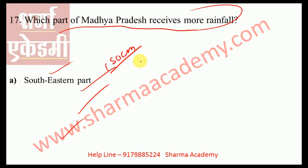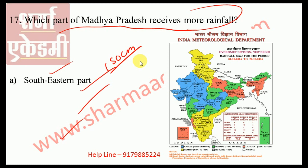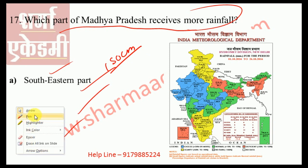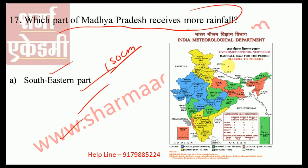The southeastern part of Madhya Pradesh receives the highest rainfall due to its proximity to the sea and the Arabian Sea branch — specifically the Mumbai branch and the Bay of Bengal branch hitting the Satpura-Maikala range. Looking at the map, the east part receives 35.9 and the west part 32.9, confirming southeast receives the most rainfall.